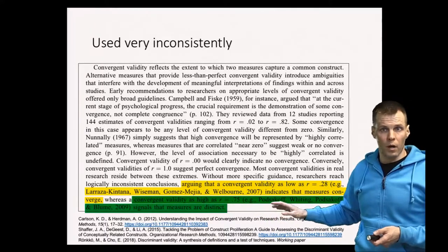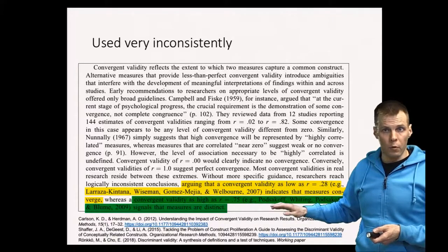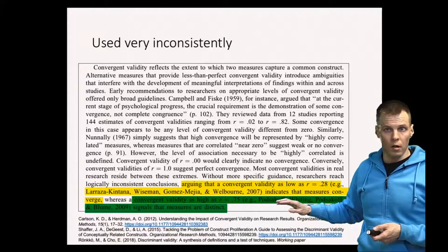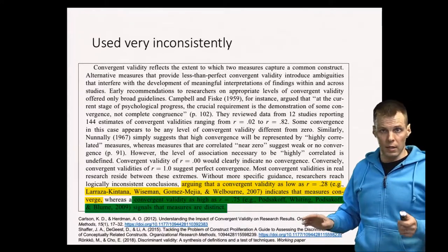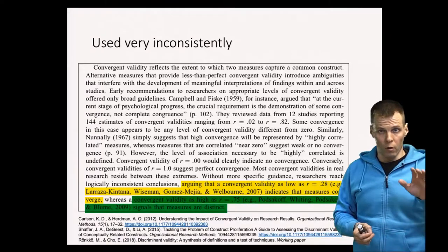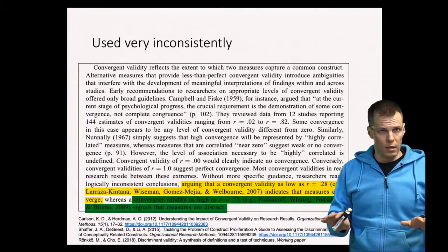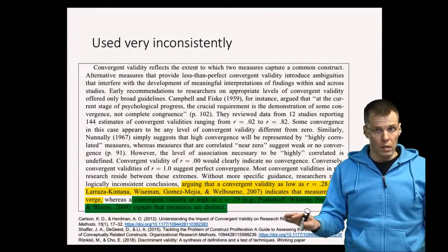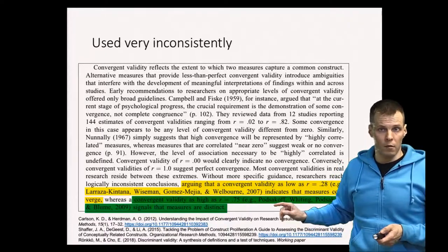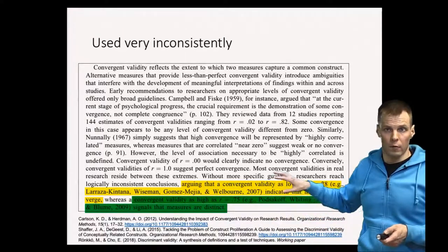So my take on this is that it's important to assess whether your scales measure distinct things. If you do a factor analysis, each indicator should load on one factor, and two scales that are supposed to measure two distinct things should be two factors. If that is the case, then you have evidence of both discriminant validity and convergent validity, and you don't really have to look at any of these correlations.